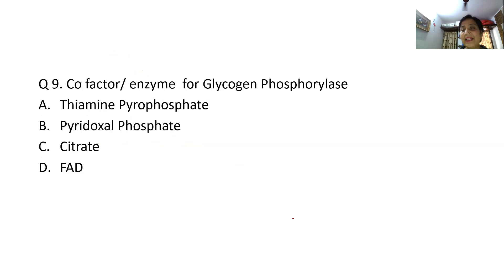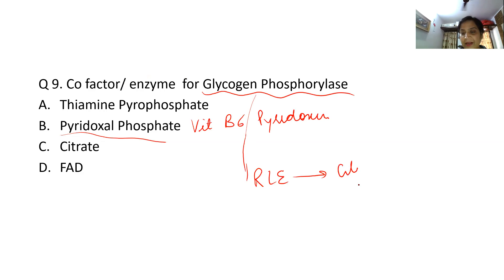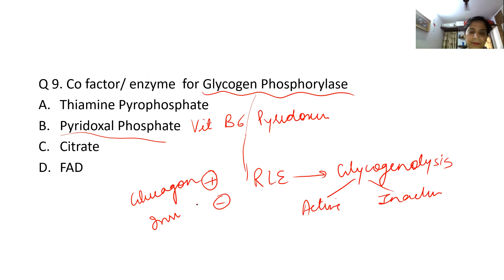Coenzyme for glycogen phosphorylase — a very important question asked in AIIMS three years back. The coenzyme is pyridoxal phosphate (PLP), also known as vitamin B6 (pyridoxine). Glycogen phosphorylase is the rate-limiting enzyme for glycogenolysis. It exists in active and inactive forms. Glucagon and catecholamines promote this enzyme, while insulin deactivates it. The answer is PLP.